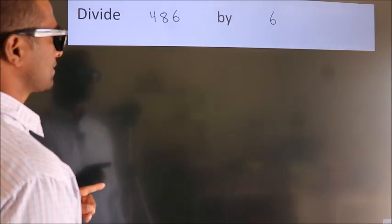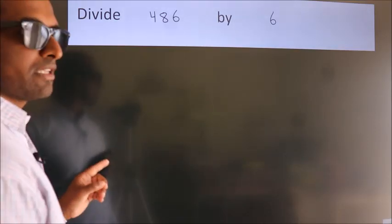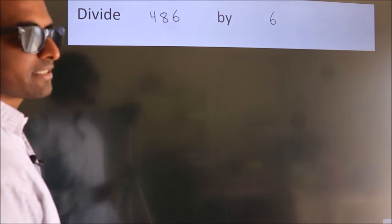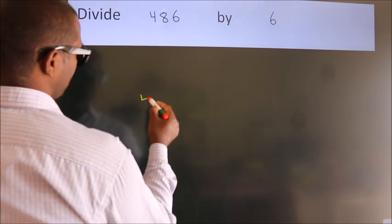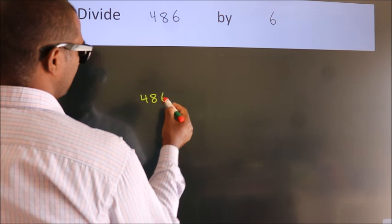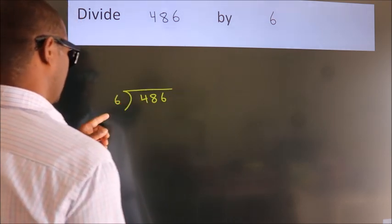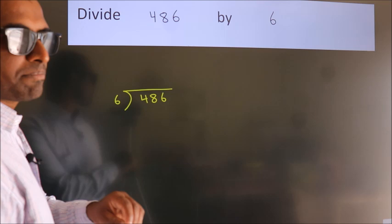Divide 486 by 6. To do this division we should frame it in this way. 486 here, 6 here. This is your step 1.